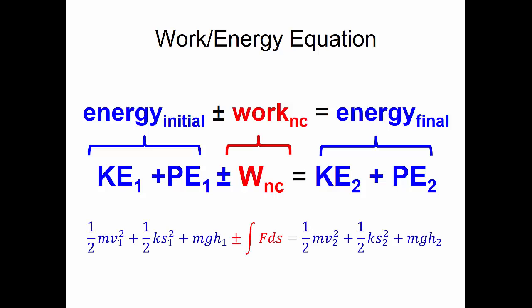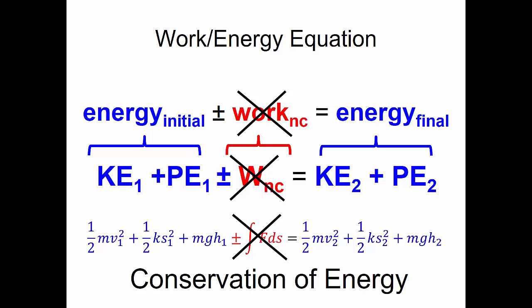Substituting in what we have for kinetic energy and potential energy, our equation becomes: one-half mass times the initial velocity squared, plus one-half the spring constant times the initial displacement squared, plus mass times gravity times the initial height, plus or minus the work (the integral of our force with respect to position), equals one-half our mass times our final velocity squared, plus one-half our spring constant times our final displacement squared, plus our mass times gravity times our final height. Sometimes we can choose a system where there's no external work performed, in which case our work term drops out of the equation and we have conservation of energy.